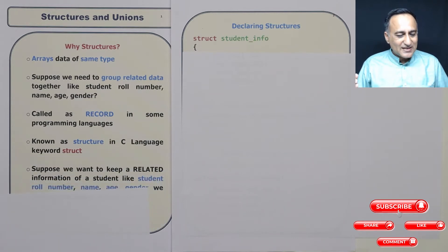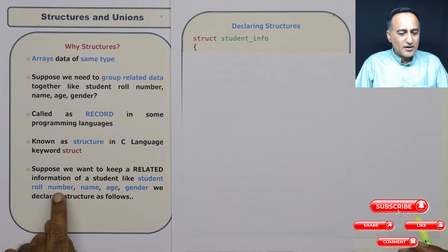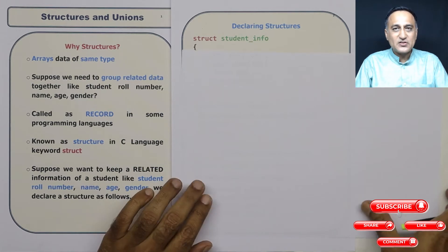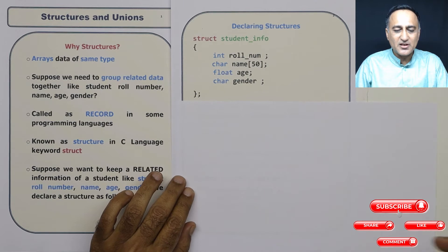Now let us say we want to keep related information of a student, like the name of the student, his role number or her role number, age and gender. In that case, what we will do is we would simply come ahead and declare a structure like this.